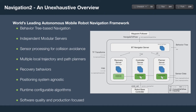The Navigation 2 stack in ROS2 is the successor to the original navigation stack. We used the lessons learned over 10 years of use, maintenance, and development to build the next world-leading autonomous mobile robotics navigation framework. Rather than being based on an unconfigurable state machine, we now have a super configurable behavior tree based navigation system. We also use independent modular servers, so things like your recovery, planner, and controller servers can be completely removed or swapped out for custom applications. We also allow for sensor processing pipelines for collision avoidance, multiple local trajectory and path planners, recovery behaviors, and we are positioning system agnostic. All plugins and algorithms are runtime configurable, including the behavior tree, and we are extremely focused on software quality.